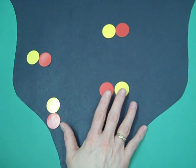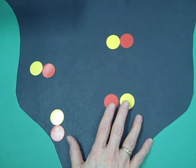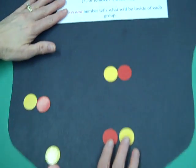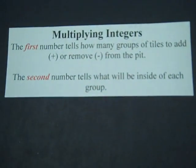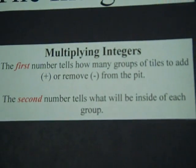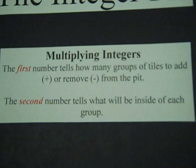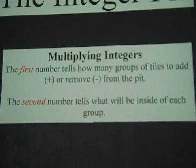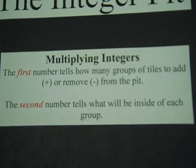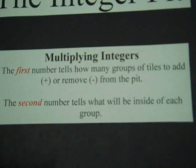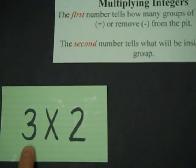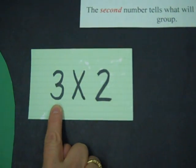When we start multiplying integers, your students should understand that the first number tells how many groups of tiles that we're either going to add or remove from the pit. If my first number is a positive number, I'm going to be putting those tiles into the pit.